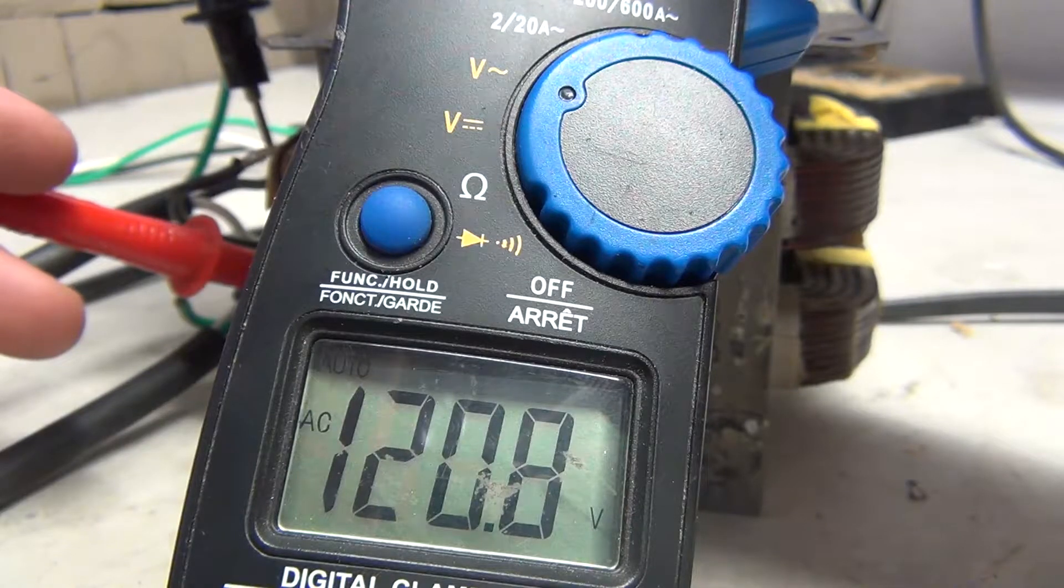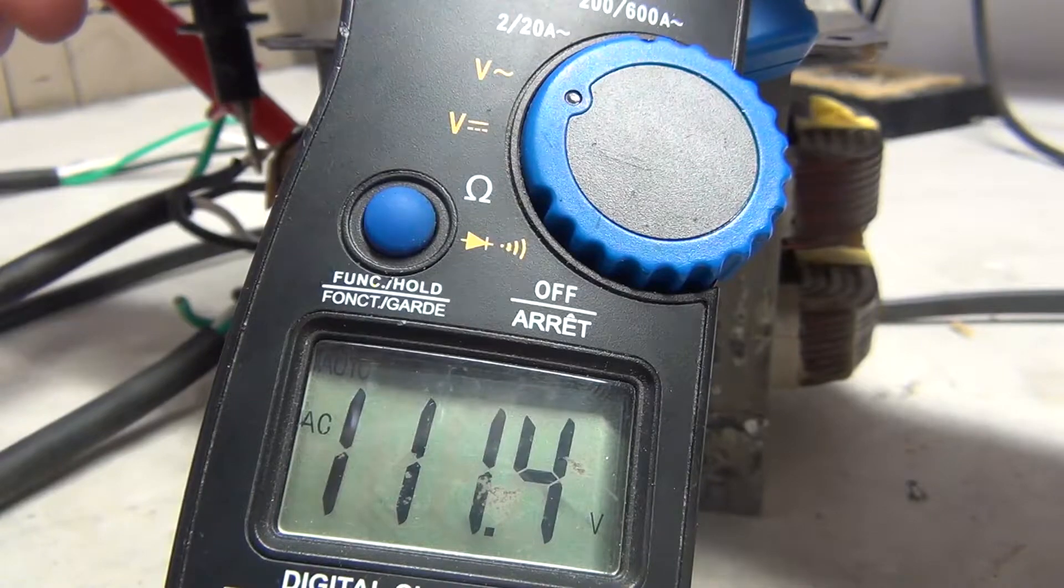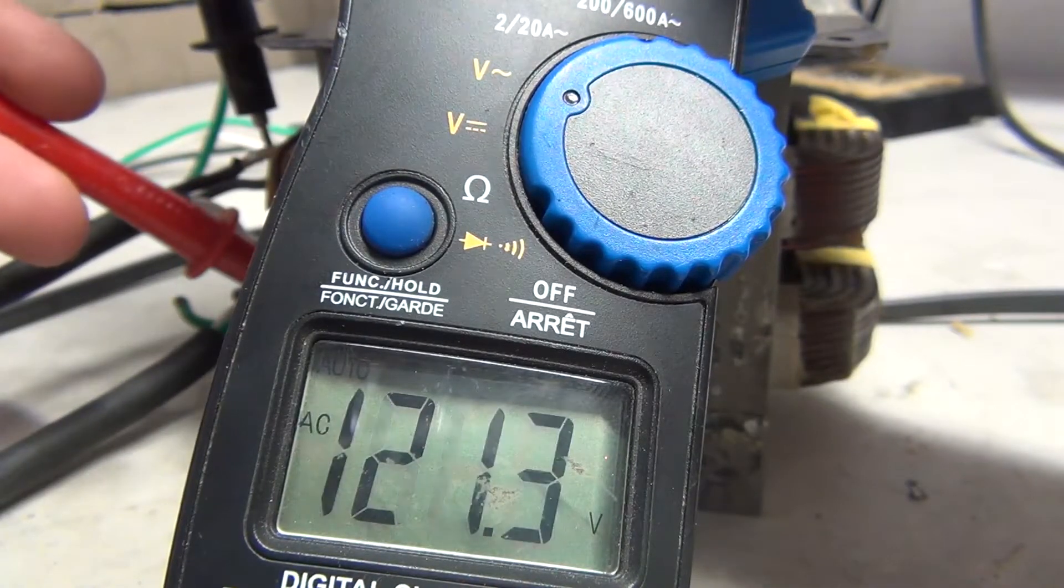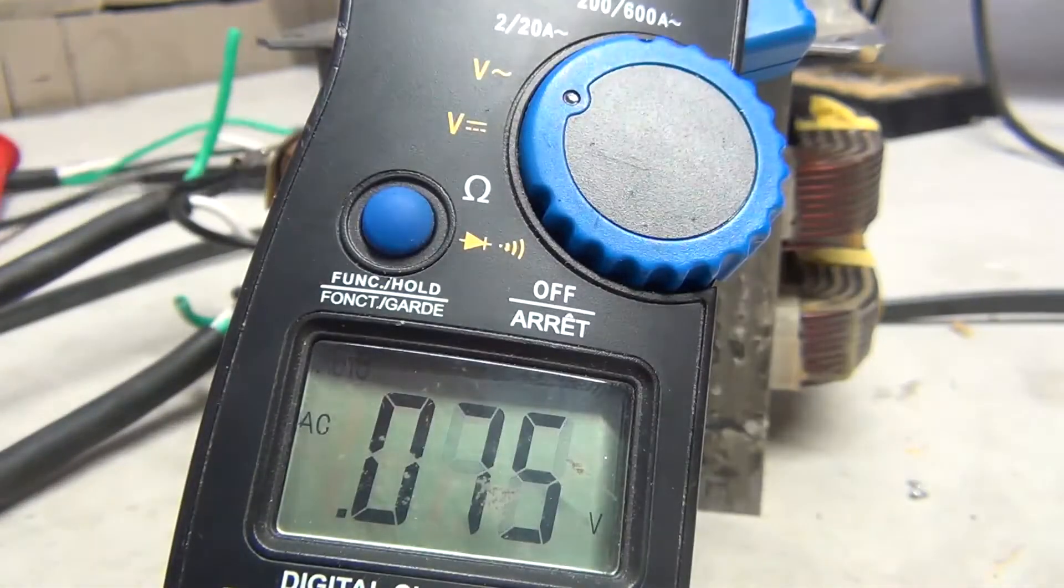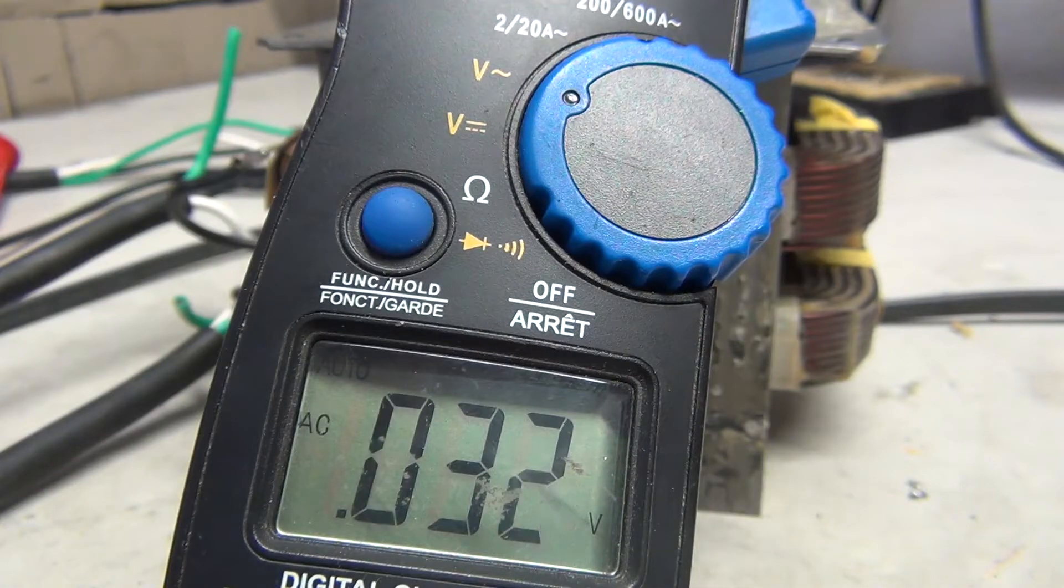And then line to neutral for the first one is 120. And line to neutral for the second one is 111. So you got a bit of loss there from different winding counts, but it's close enough to be usable for just a rigged up system.